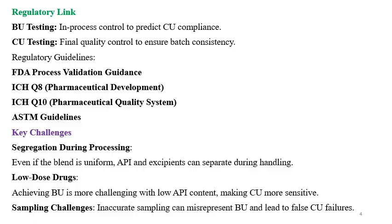Key challenges in BU and CU include segregation during processing — even if the blend is uniform, API and excipients can separate during handling, capsule filling, or compression, leading to failure of CU. Low dose drugs present another challenge: achieving BU is more challenging with low API content, making CU more sensitive. Sampling challenges also exist, as inaccurate sampling can misrepresent BU and lead to false CU failures.